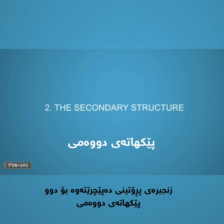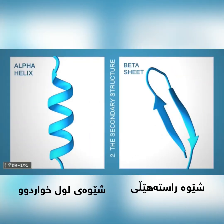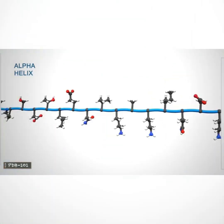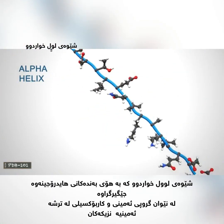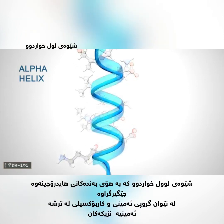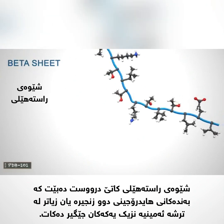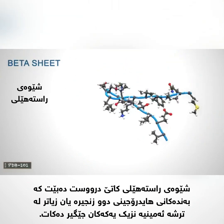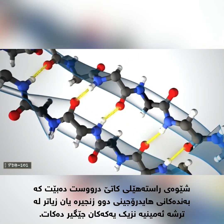Protein chains often fold into two types of secondary structures: alpha helices and beta sheets. An alpha helix is a right-handed coil stabilized by hydrogen bonds between the amine and carboxyl groups of nearby amino acids. Beta sheets are formed when hydrogen bonds stabilize two or more adjacent strands of amino acids.